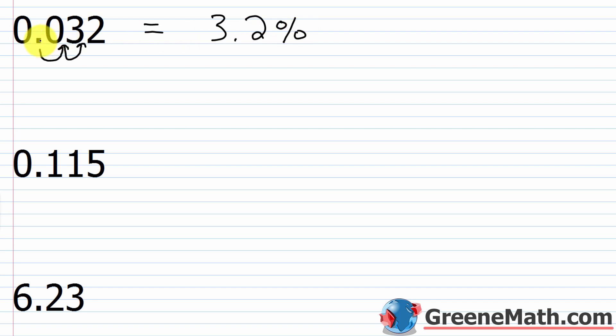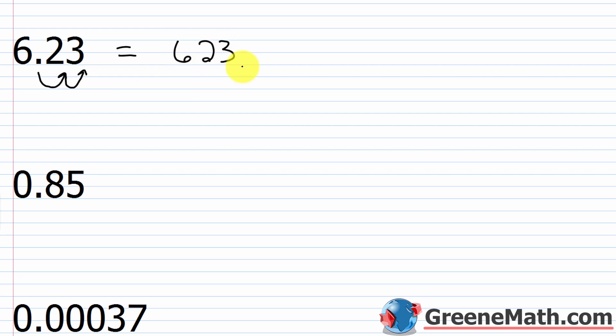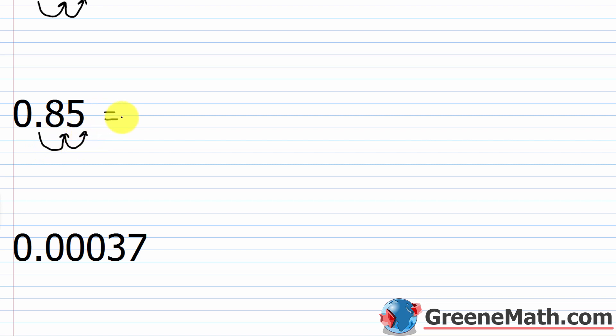Some of you might be saying, where did the zeros to the left of the three go? Remember, if I have two zeros to the left of the three, that does not add value to the number, so we can just get rid of them. For the next one, we have 0.115 — moving the decimal point two places to the right gives me 11.5, and then I put my percentage symbol. So 0.115 is equal to 11.5%. Next, looking at 6.23 — move the decimal point two places to the right, so that's 623, and then put a percentage symbol. And 0.85 — move two places to the right gives 85, so 85%.